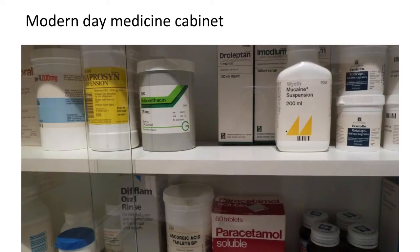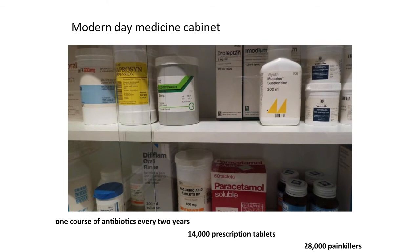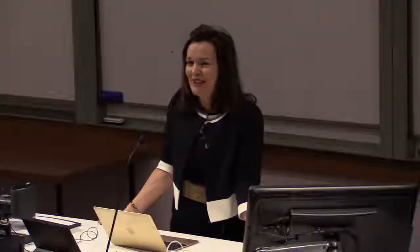Why is it important that we try to understand this? Because you're going to take at least one course of antibiotics every two years — the current average. In your lifetime you'll have a staggering 14,000 prescription tablets, plus 28,000 painkillers. It would be quite useful to know what you're actually taking and how it works. By the time you're in your 70s you'll probably be on about five tablets a day, so I'm told.